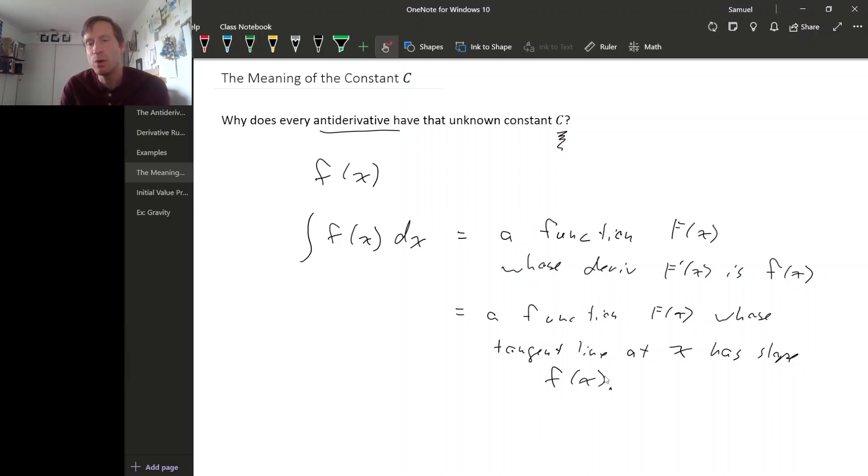So what we can do to figure out what this plus C is doing is think about starting with a function and then looking at functions whose tangent line slopes are given by the function we started with.